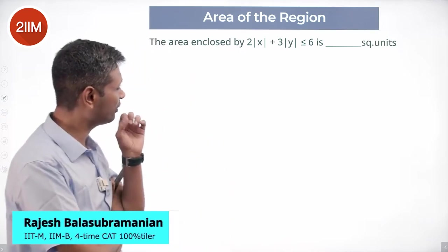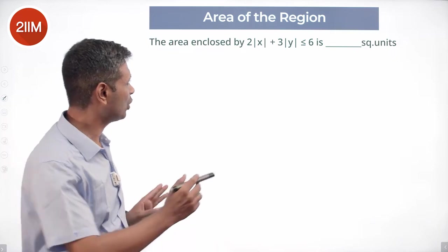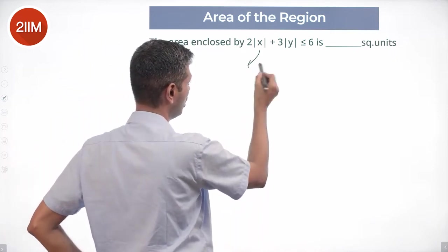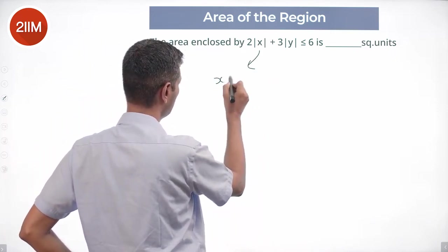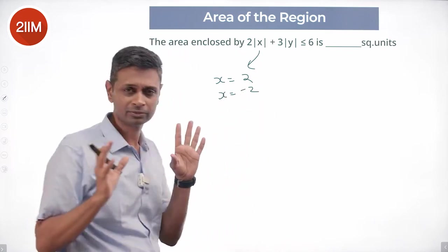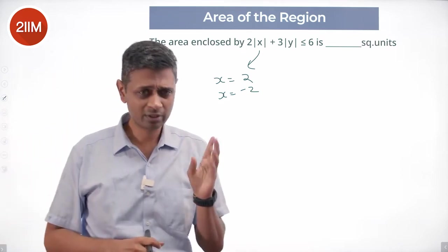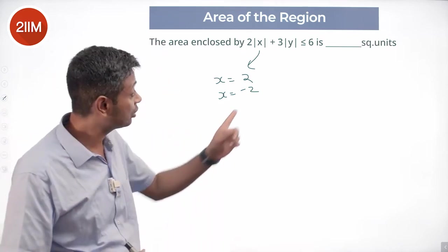Beautiful question, particularly very interesting to deal with mod x and mod y. First of all, whenever modulus is involved, we know if x equals 2 satisfies it, x equals minus 2 will satisfy it in some form. Whatever satisfying means, if x equals 2 works, x equals minus 2 will work. There's a mod sitting here as well.